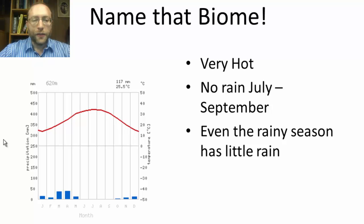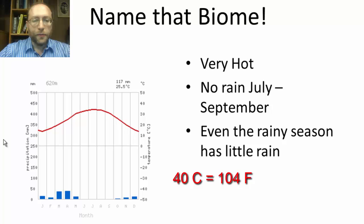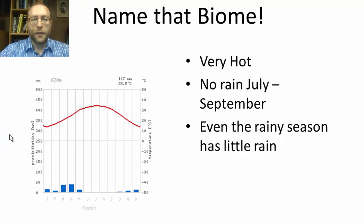Now we have another biome. The precipitation is also very low — in some months slightly more than in the tundra, and in other months there's really nothing, no rain at all. Temperature-wise, it's very different. While we see the same seasonal fluctuations as in the tundra, here it gets hot: in the summer it gets significantly hotter than the tropical rainforest, up to close to 40 degrees Celsius. Then in the winter it drops down to about 12 degrees Celsius. So where is it very hot with very, very little rain? The desert.